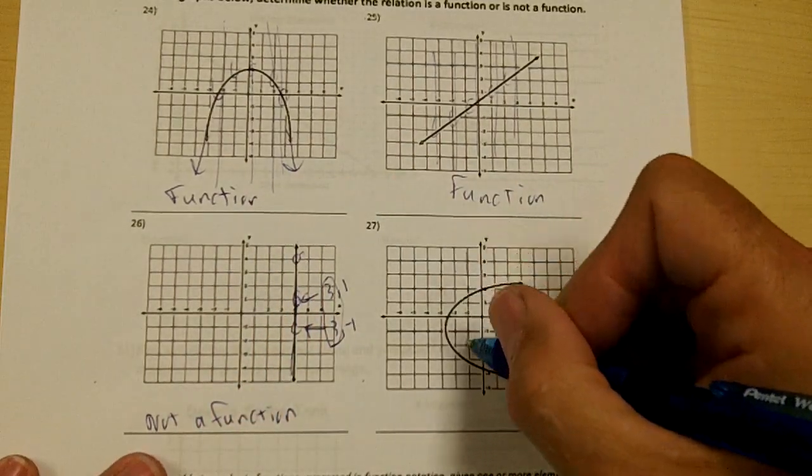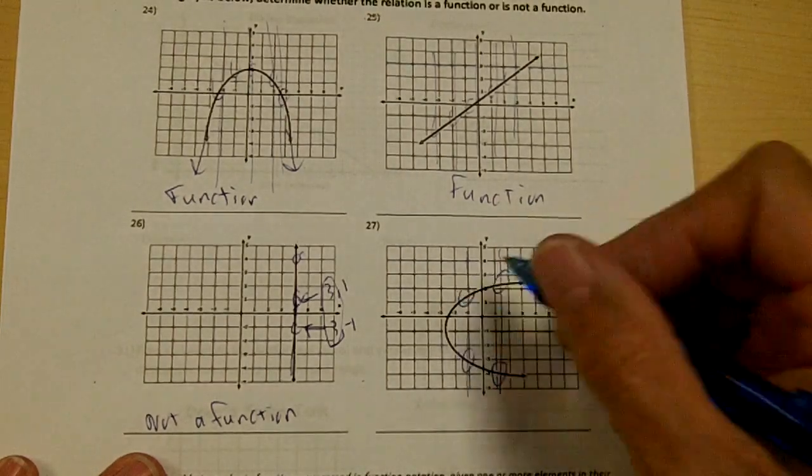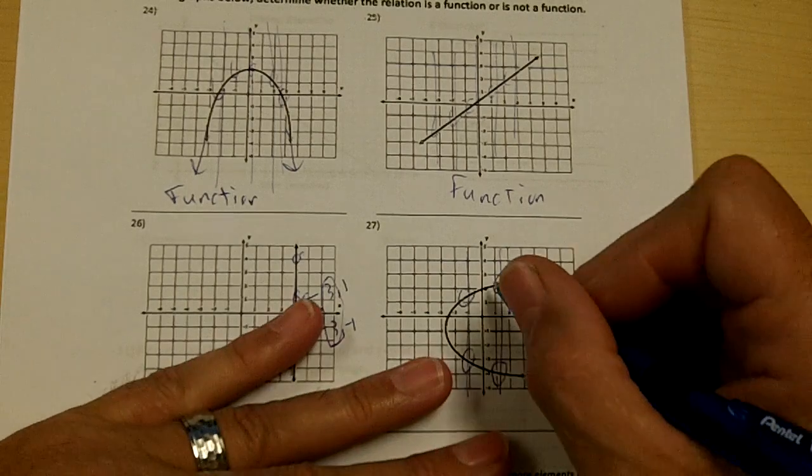And then over here, I'm going to show you. A vertical line crosses the graph twice. Just to show you this,